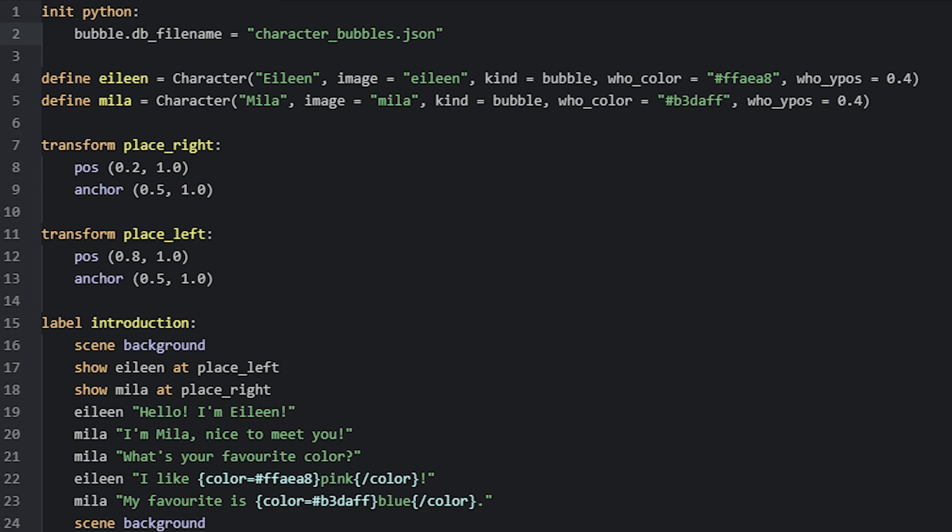To do this, we need an init python block, as this variable needs to be set before the game loads at initialization time. For this example, I chose to call the file characterbubbles.json.